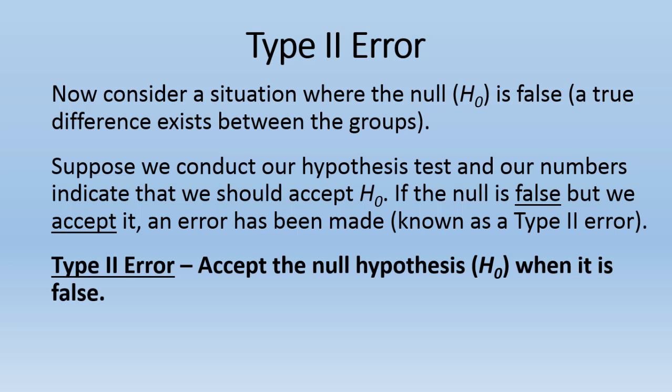And for a formal definition, the Type II error is when we accept the null hypothesis (H₀) when it is false. And once again, if it's false, we shouldn't accept it. That's why it's an error. We should reject it.